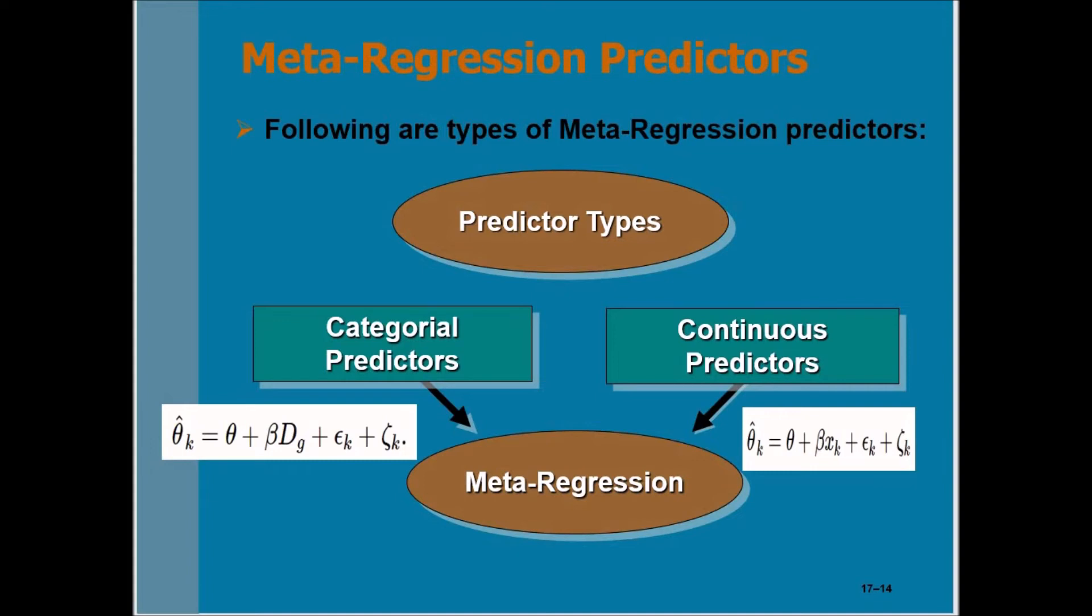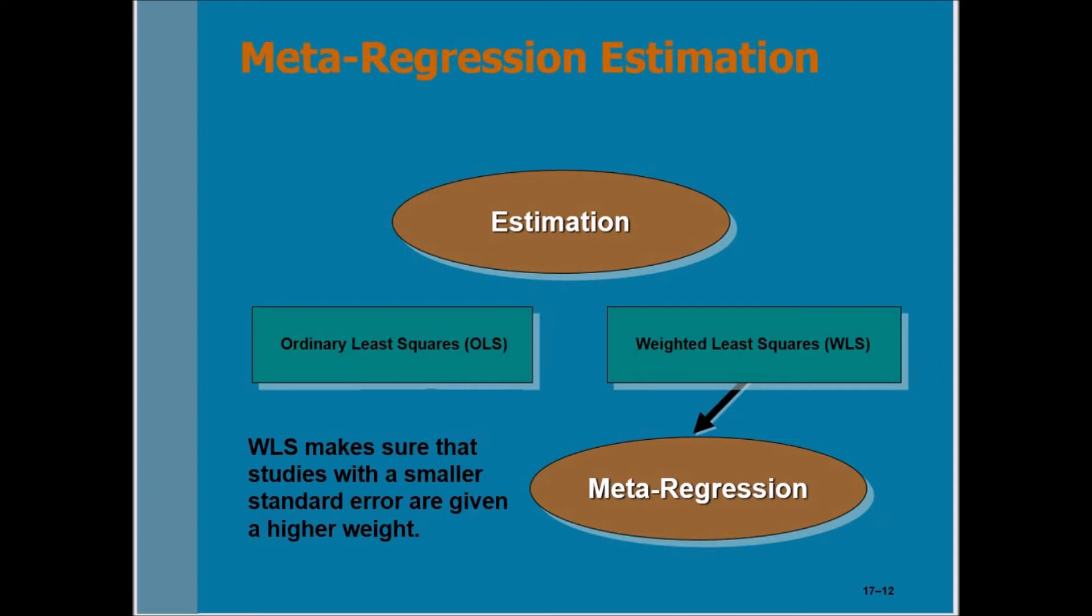What estimation technique will you use in meta-regression analysis? In traditional regression analysis, we used OLS—ordinary least squares—for estimation of parameters. But in meta-regression analysis, we will use weighted least squares (WLS) for the estimation of parameters, because WLS makes sure that studies with a smaller standard error are given a higher weightage.